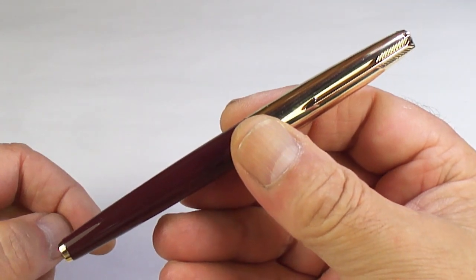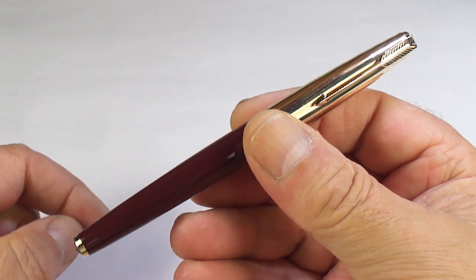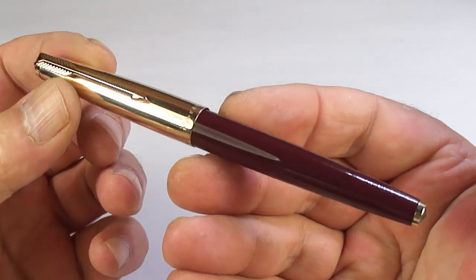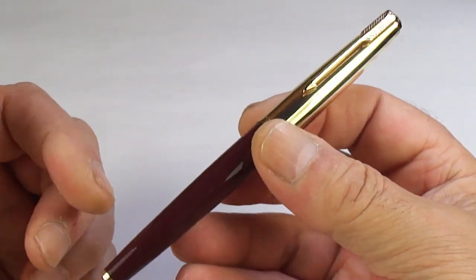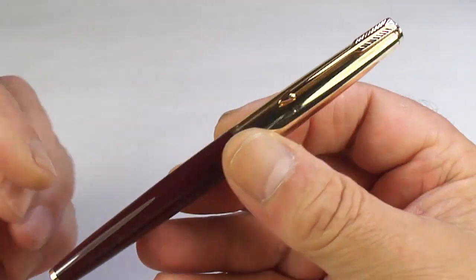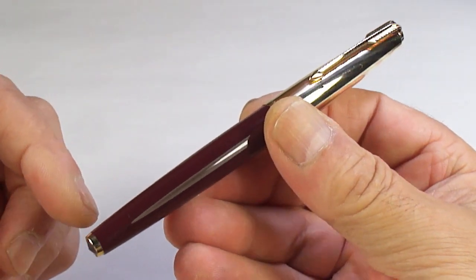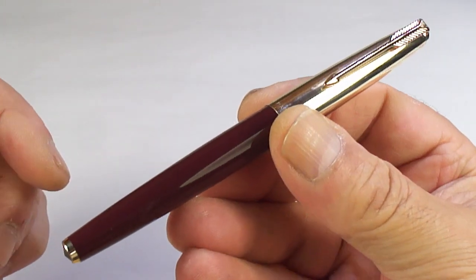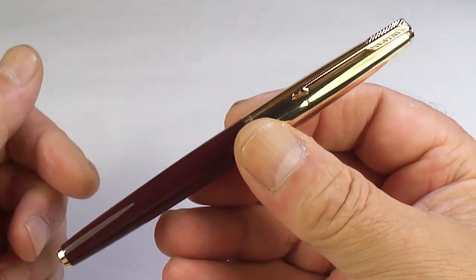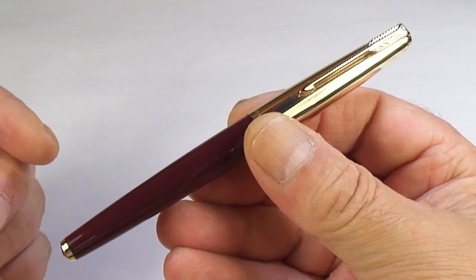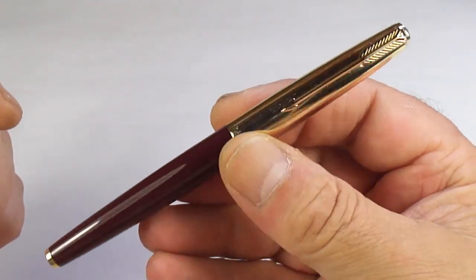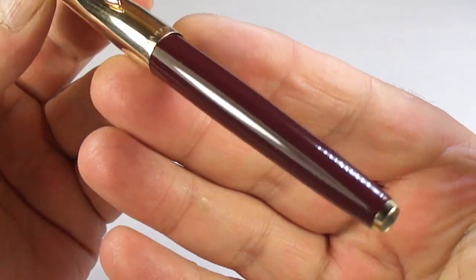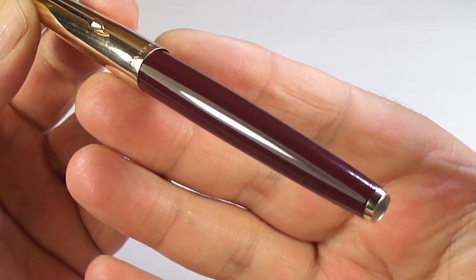It's a lovely Parker 61. This is the Heirloom fountain pen and it's the CC version, which means cartridge converter. Now some of you may or may not know, the earlier Parker 61s came with what we term as a capillary filler. The later versions, and when I say later we're dating this around about the 1960s, came as a cartridge converter fountain pen.